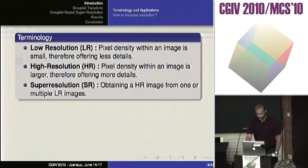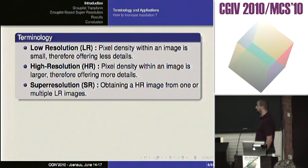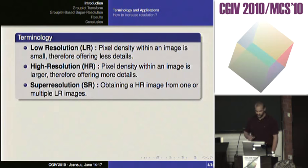There is terminology in image processing. Lower resolution means that you have a small pixel density, so you don't have good details of your objects. When we talk about high resolution, it means that we have high density. And when we talk about super-resolution, it means that we will go from a small, low-resolution image to a high-resolution one, thanks to several properties.